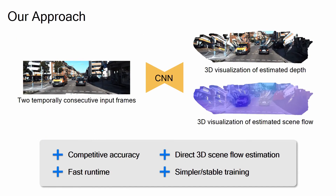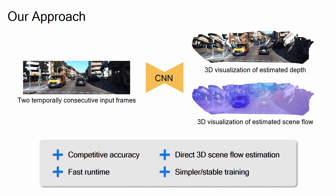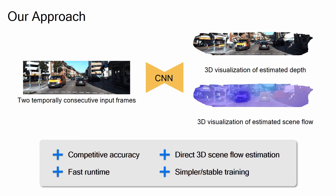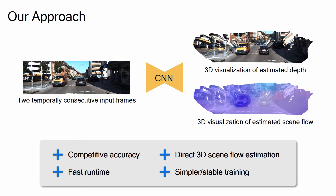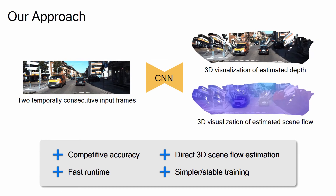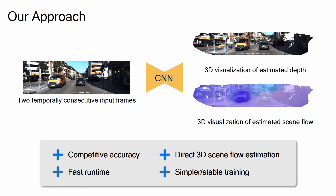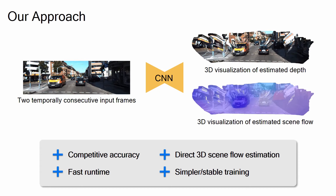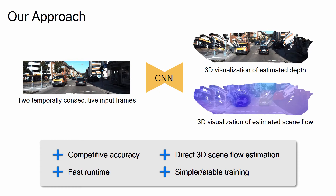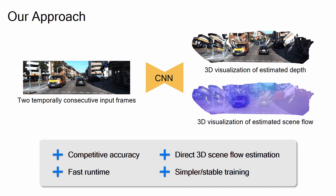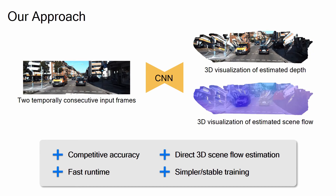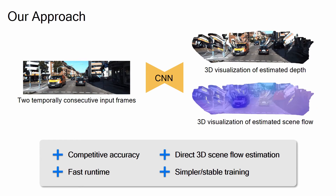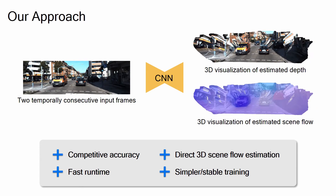We propose a novel deep learning approach for monocular scene flow, which overcomes the limitations of previous work. Our model demonstrates competitive accuracy in real time, resolves the occlusion problem by directly estimating scene flow with the network, and demonstrates simple and stable training, which is preferred in practice.